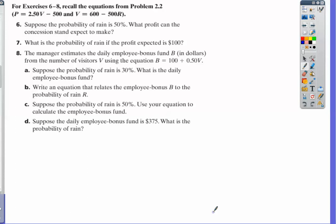In Investigation 2.2, we took a look at a water park that had two equations: one dealing with profit, P = 2.5V - 500, and the other for visitors, V = 600 - 500R.